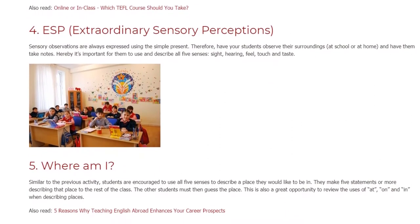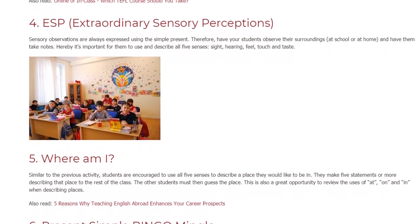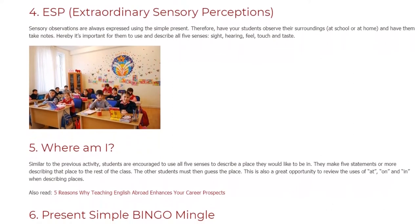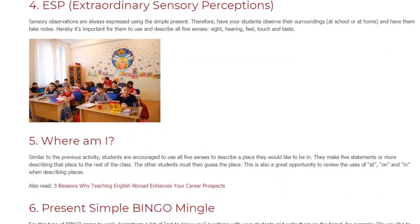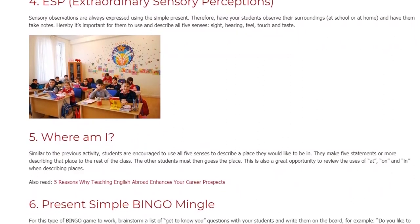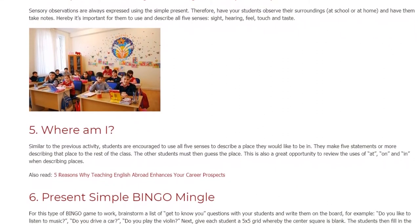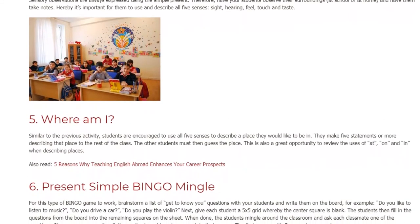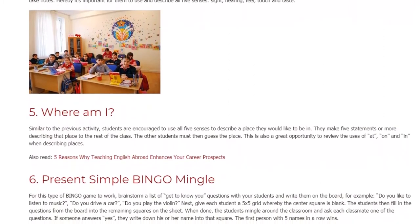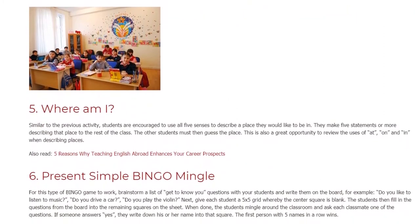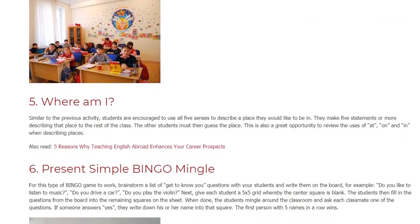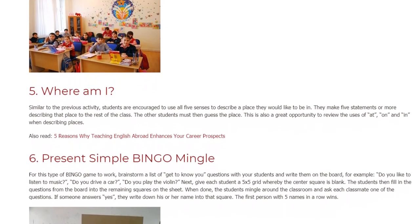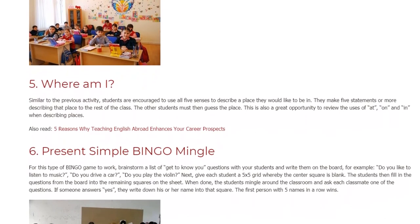Activity 5: Where Am I? Similar to the previous activity, students are encouraged to use all five senses to describe a place they would like to be in. They make five or more statements describing that place to the rest of the class, and the other students must guess the place. This is also a great opportunity to review the uses of 'at,' 'on,' and 'in' when describing places.